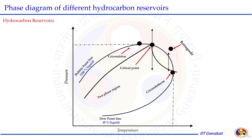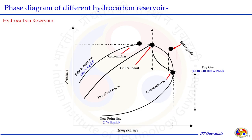The retrograde region is where the fluid changes phase differently than expected. In the LPG cylinder example, increasing pressure should move gas to liquid. But in the retrograde region, it behaves differently — when we release pressure, the gas goes to the liquid phase, which is the reverse phenomenon, and because of that we produce liquid along with gas at the surface. Beyond the Cricondentherm, we have only dry gas, with GOR around 1 lakh (100,000) or more SCF per STB.